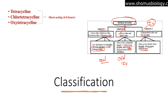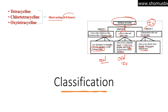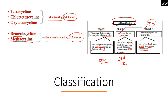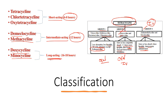Breaking down the classes further: tetracycline, chlorotetracycline, and oxytetracycline are short-acting, lasting 6 to 8 hours. Demeclocycline and metacycline are intermediately acting at 12 hours. Doxycycline and minocycline are long-acting at 16 to 18 hours. These cover all the classification types of tetracycline.